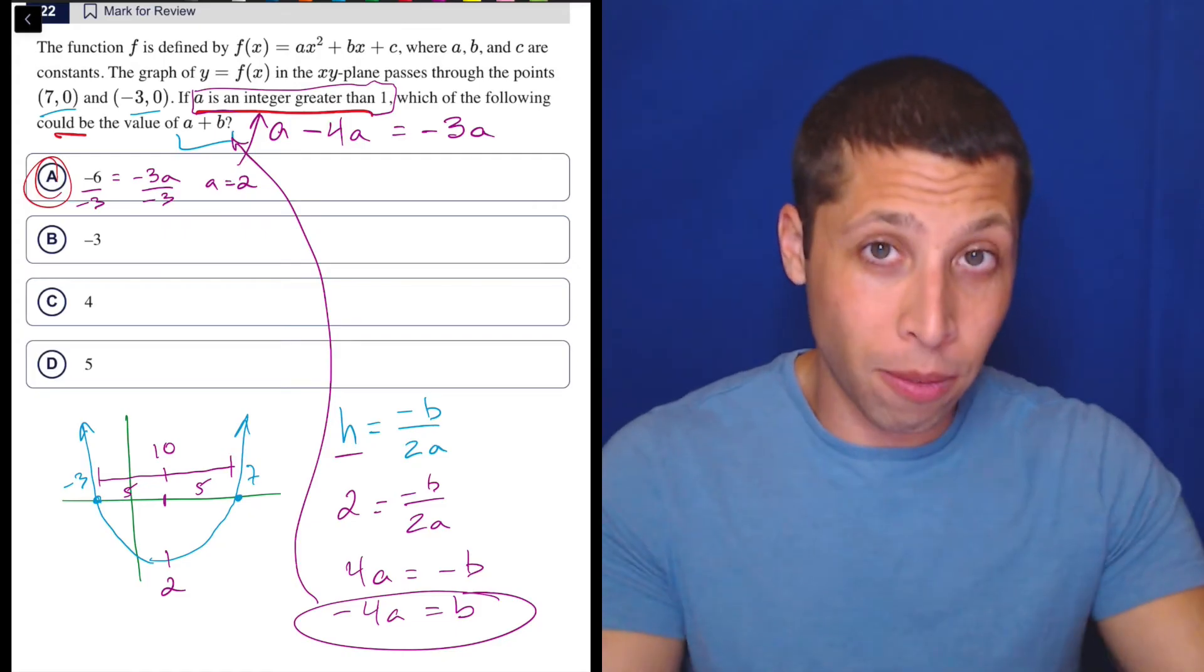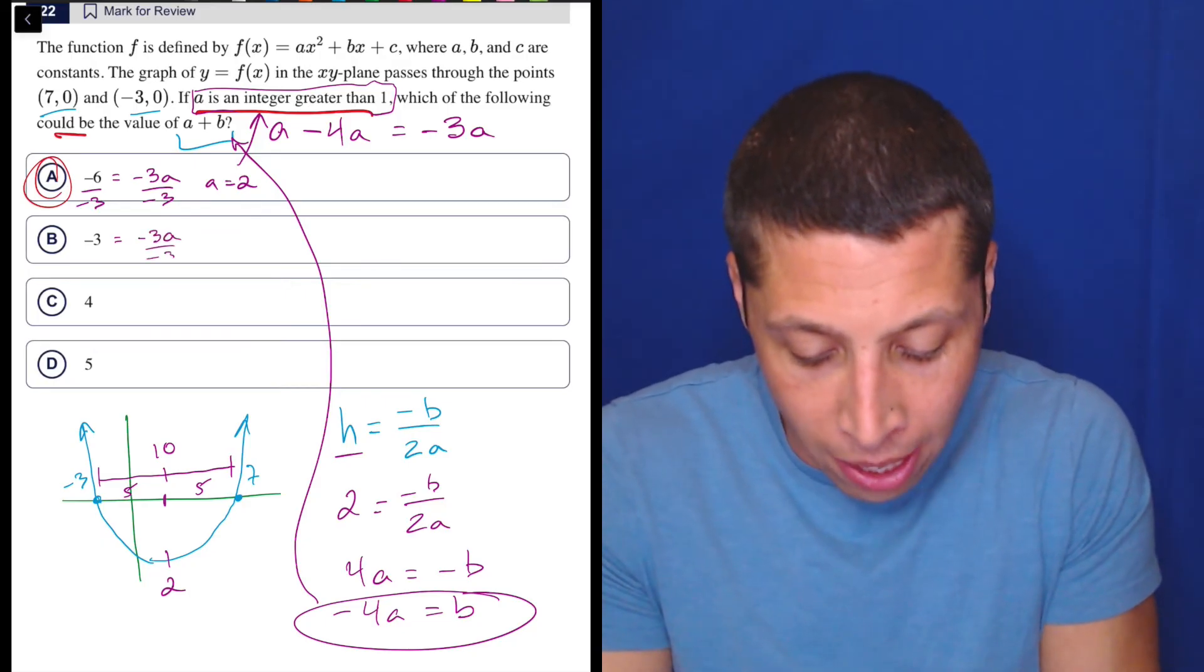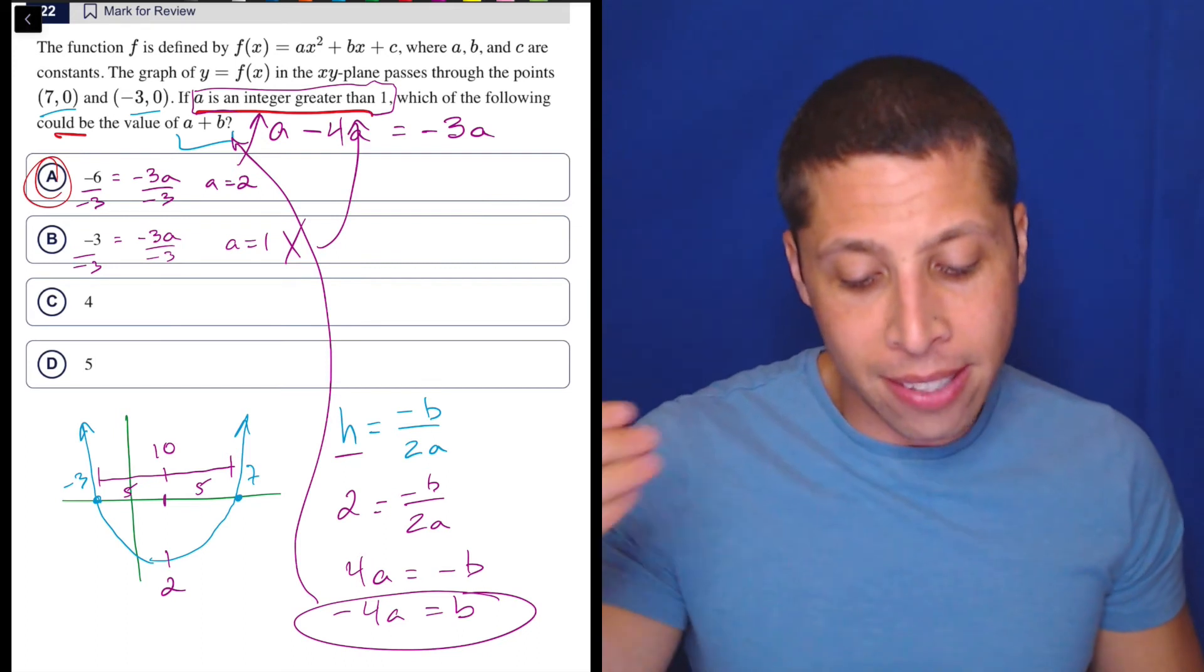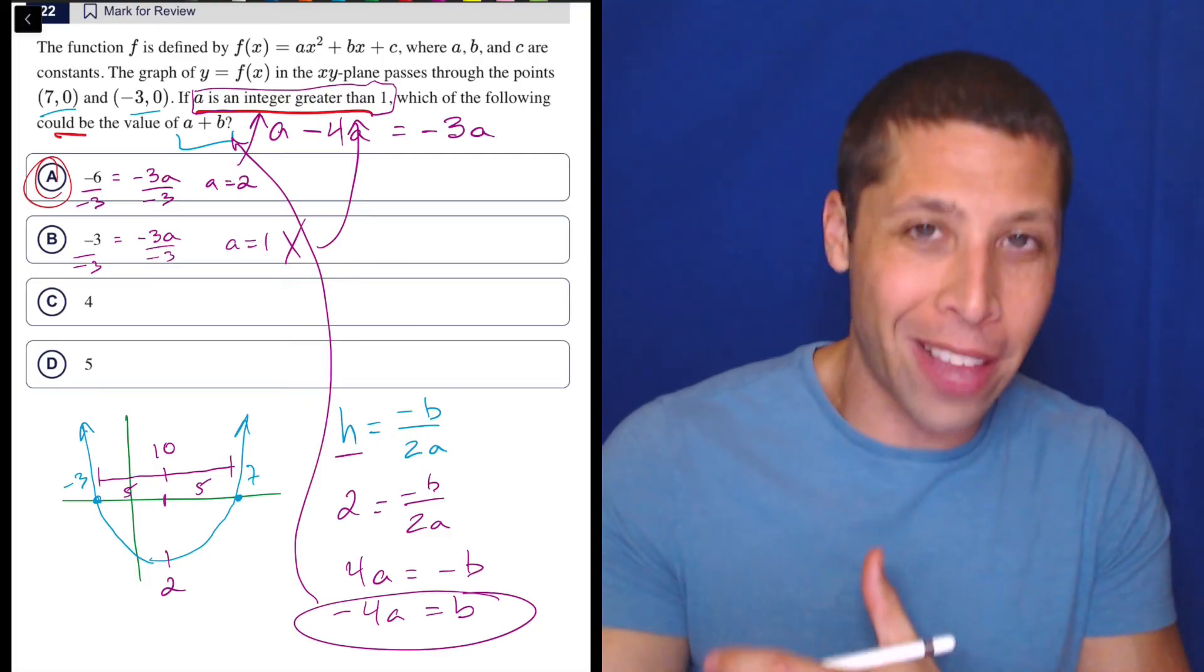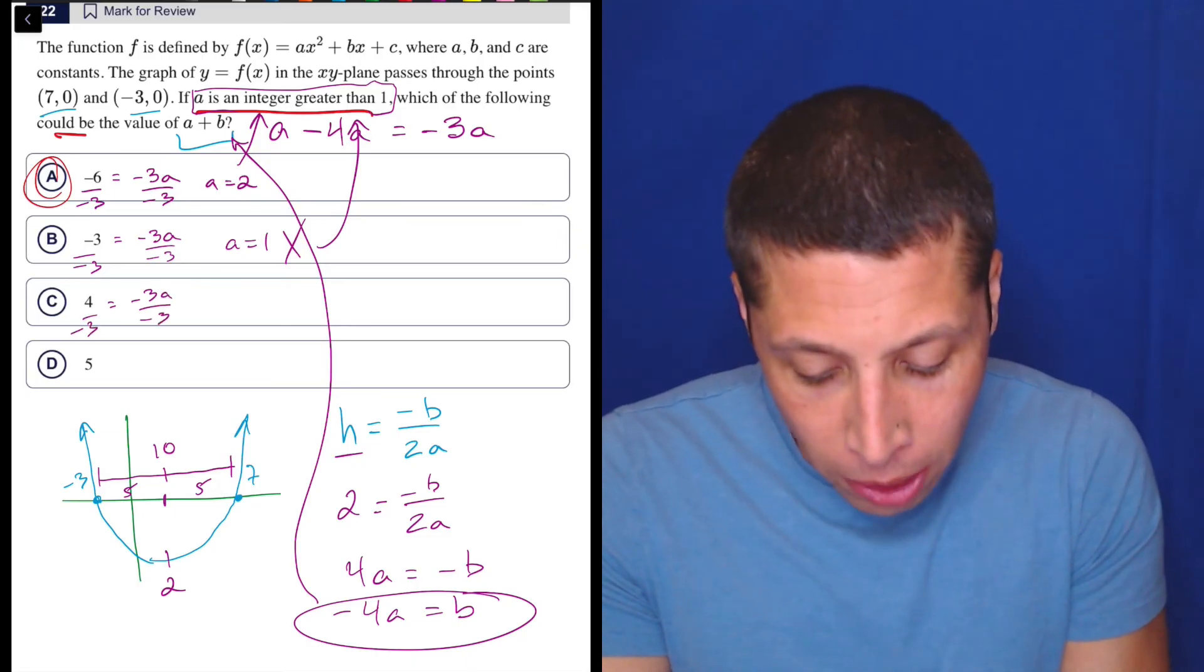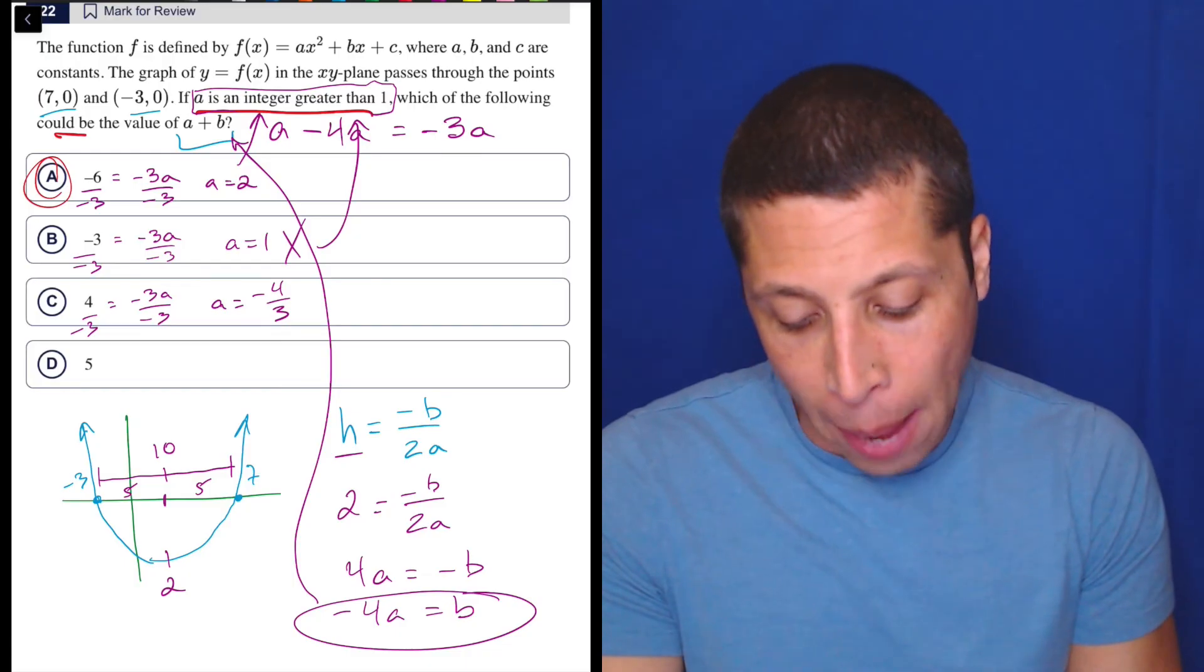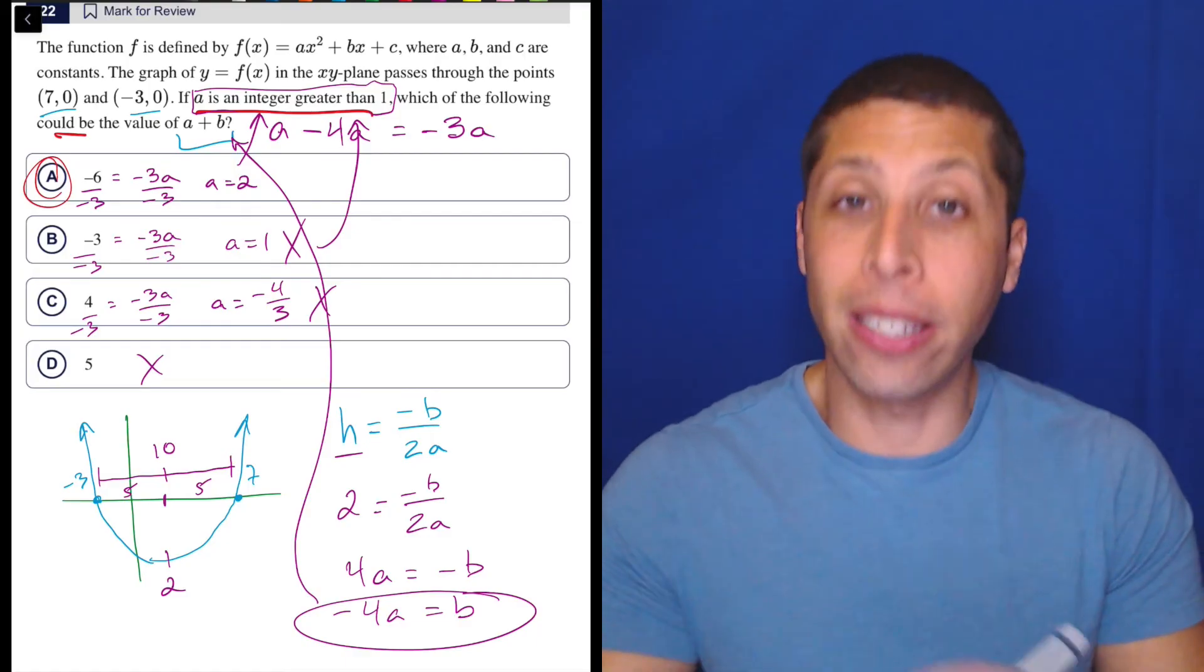Just to show you what could go wrong if we did choice B here, right? So negative three is equal to negative three A, right? If we did the same move and we divide it, we get A is equal to one. But one does not satisfy that condition, right? One is not an integer greater than one. One is one, right? So that doesn't fit, right? This is the difference between the greater than and the greater than or equal to symbols, right? If we did four, right? So negative three A and we divided by negative three, well, we'd have a messy number, but more important than it being a fraction is it being negative, right? So it has to be greater than one. So negative isn't going to work. And the same thing is going to happen with D. So we're going to basically be able to eliminate all of these answers by showing that they violate one of our conditions.